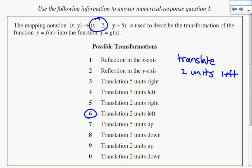Next, I have -y + 5. Let's break that apart, starting with the -y part. Negative y means I'm multiplying all my y values by -1.